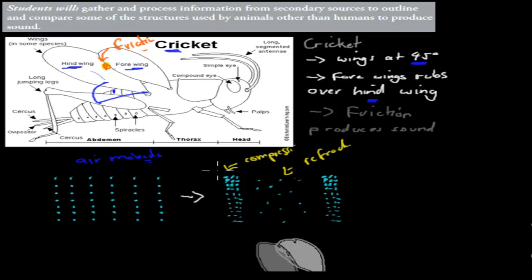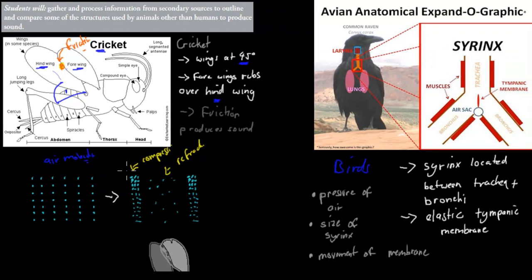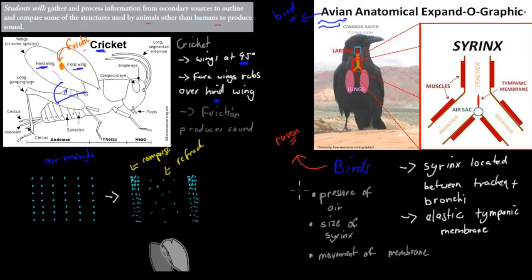So that's the outline, and then the compare. You can tell the difference between human production of sound and cricket production of sound — they're quite different. But one animal that has a more similar way of producing sound would be birds. Avian just refers to anything that has flight — in many cases the bird being talked about here. If you want a specific example, you can remember the raven, but basically any bird uses a very similar system to produce sound.